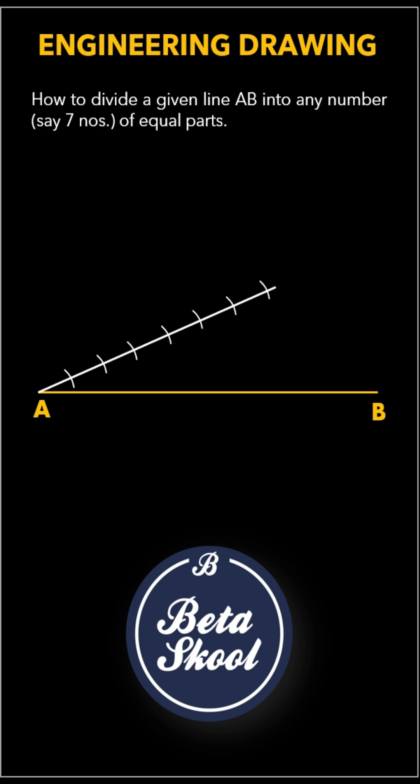Now name these points as 1, 2, 3, 4, 5, 6, 7. Now join point 7 to B. Similarly, from points 6, 5, 4, 3, 2, 1, draw lines parallel to line 7B.